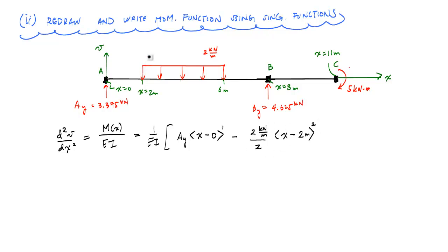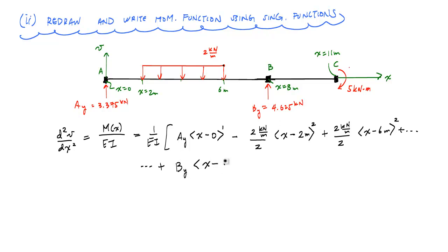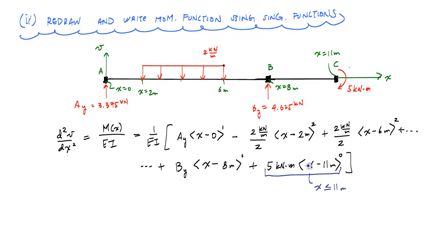Once a singularity function turns on the distributed load, it stays on for the entire beam. So at x equals 6 meters you have to turn it off using superposition — adding plus 2 kilonewtons per meter over 2 times ⟨x − 6⟩². At point B, the concentrated reaction gives plus BY times ⟨x − 8⟩¹. Then plus the concentrated moment: 5 kilonewton·meters times ⟨x − 11⟩⁰. This last term has no impact on the rest of the beam since x is always less than or equal to 11, effectively zero at worst.